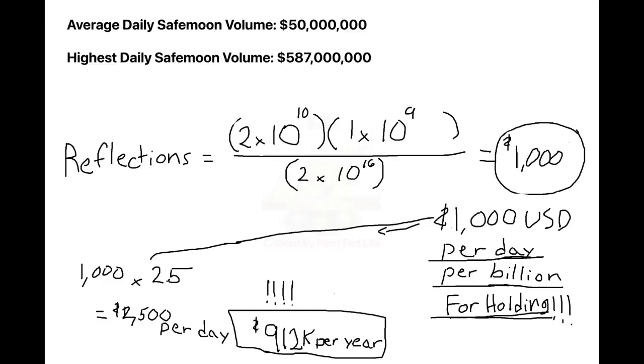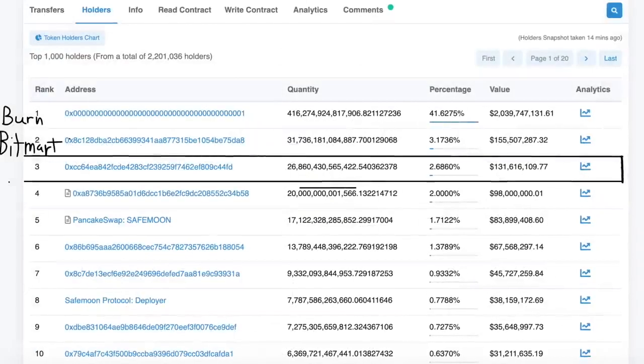And the whales know this. The whales with 1 trillion coins are earning, right now, $50,000 per day, just for holding, per trillion, which is $1,000,000 per day if it reaches Doge-levels, per trillion coins. Our top whale would be making $27,000,000 per day. That's why he's held through this thick and thin, he has over $200,000,000 in SafeMoon. He's just kept on holding. He knows this.